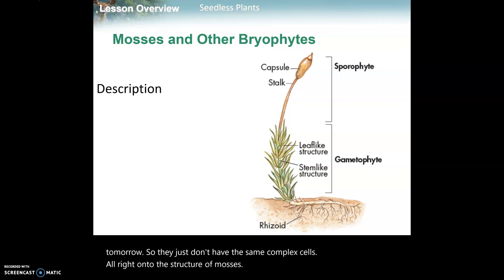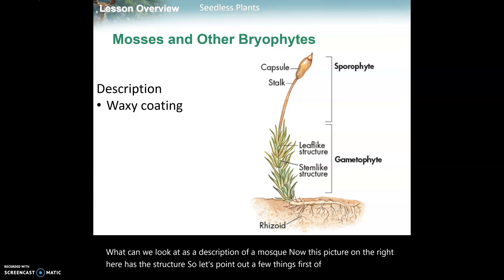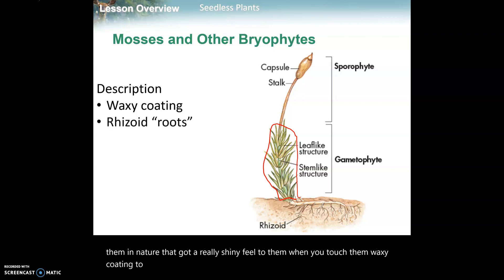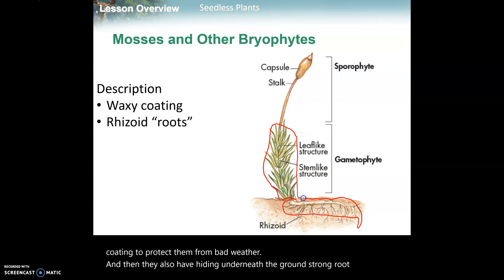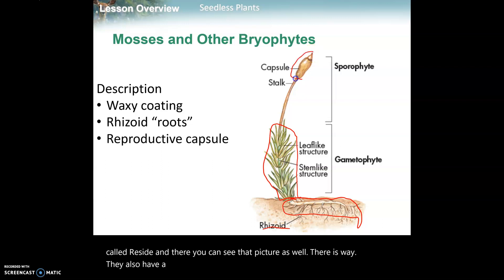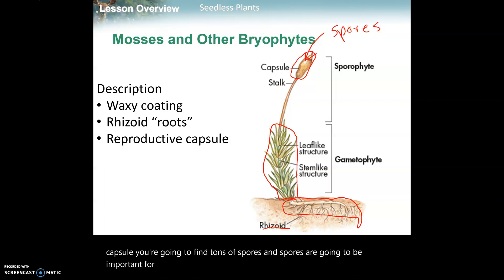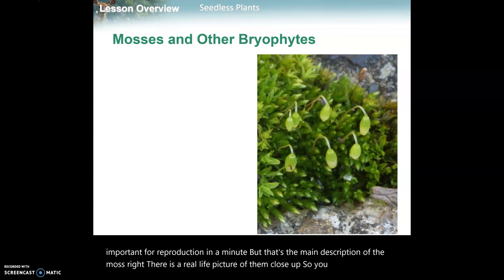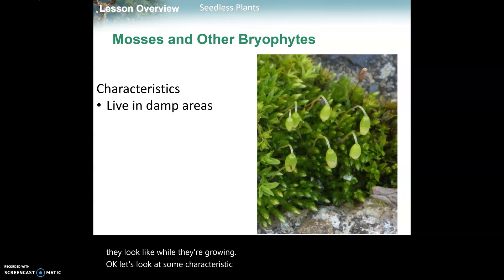On to the structure of mosses. First of all, mosses are very waxy - they almost look like a wax carpet when you find them in nature, with a really shiny feel. They have a waxy coating to protect them from bad weather. They also have a strong root system underneath the ground called rhizoids. They also have a reproductive capsule - inside that capsule you'll find tons of spores, which are important for reproduction.